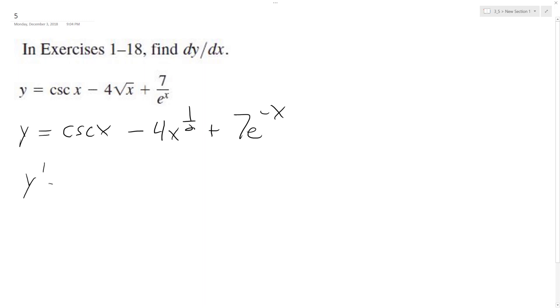All right, so starting off, y prime. The derivative of cosecant is equal to negative cosecant x times cotangent x.